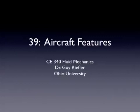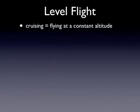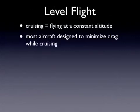Let's talk about some aircraft features. Level flight is also described as cruising, and this is when an aircraft is flying at a constant altitude — not ascending or descending. Most aircraft are designed to fly this way, minimizing drag while cruising. Most aircraft are really designed for transportation: get up in the air, travel at a constant altitude, and then go back down again, using the least amount of fuel.